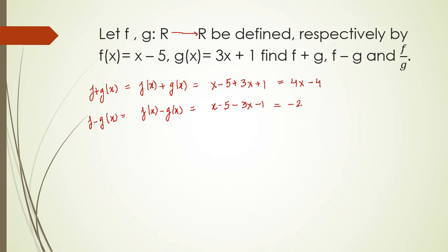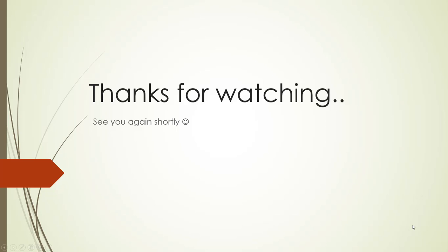And f over g(x) will be f(x) over g(x). This will give me x minus 5 over 3x plus 1. Thanks for watching this video.